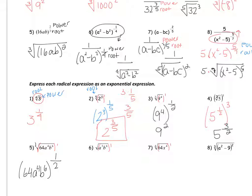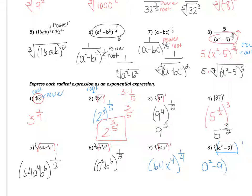For example six, it's a square root, so a to the third b to the sixth, that whole thing under the radical, to the one-half power. Number seven is the fourth root — that's to the one-fourth power — so 64x to the fourth, all to the one-fourth. For number eight, the whole thing is raised to the one-third power since it's underneath the cube root: a squared minus nine squared to the one-third. We can multiply those, giving a squared minus nine to the two-thirds.